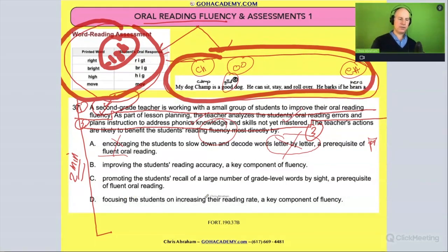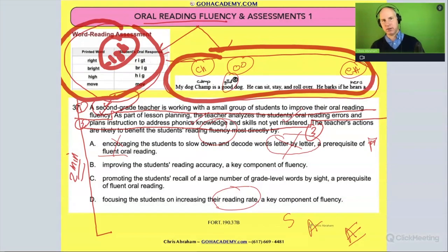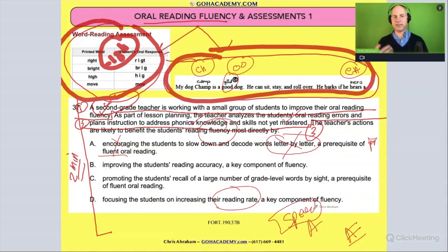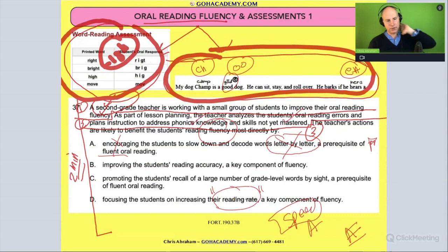Choice B: 'Focusing the student on increasing their reading rate — a key component of fluency.' Reading rate — sometimes going fast does not build fluency on its own. We say speed, accuracy, and expression. Yes, it might potentially improve speed, but that's not the focus of this activity. We're fixing errors. When a student focuses on speed, they can mess up accuracy and lose expression. So no, that's not it.